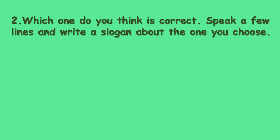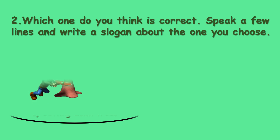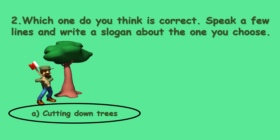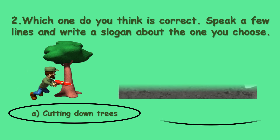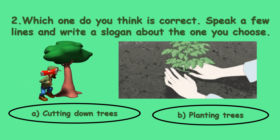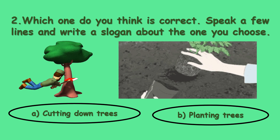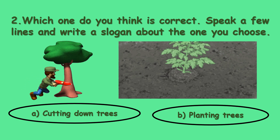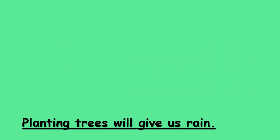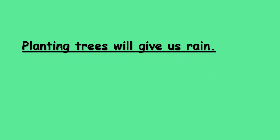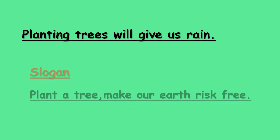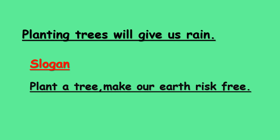Which one do you think is correct? Speak a few lines and write a slogan about the one you choose. The first picture shows cutting down trees. The second picture shows planting trees. The second picture — planting trees — is correct. Planting trees will give us rain. Slogan: Plant a tree, make our earth risk free.